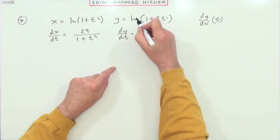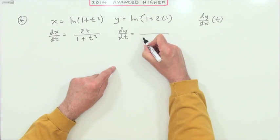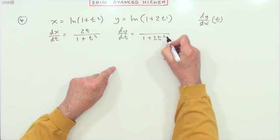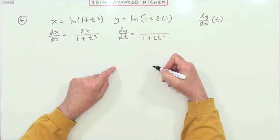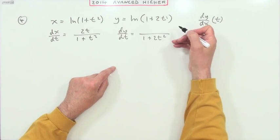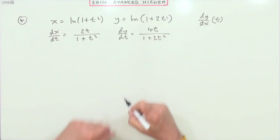dy/dt is log, differentiating the log would be one over one plus the function it's acting on, one plus 2t squared, multiplied by the derivative of it, but I could just pop that top here which is 4t.